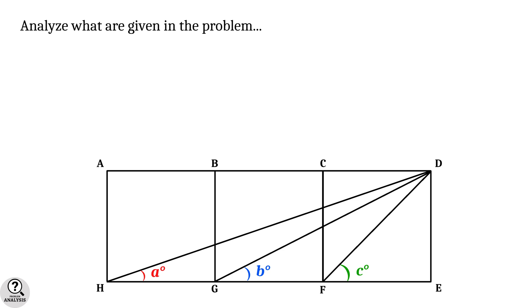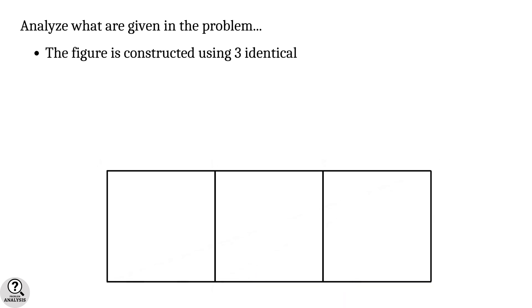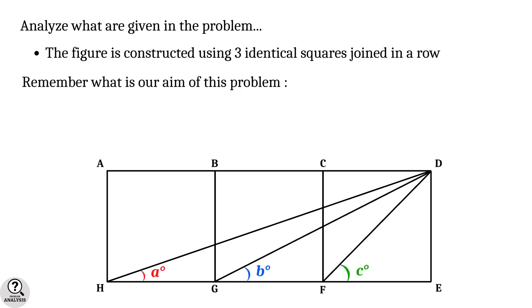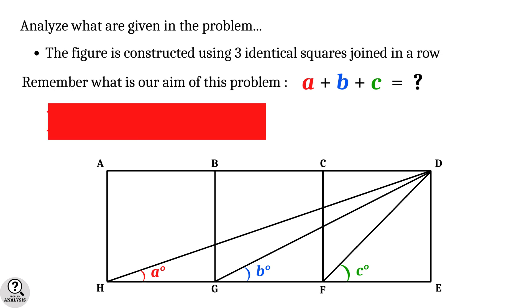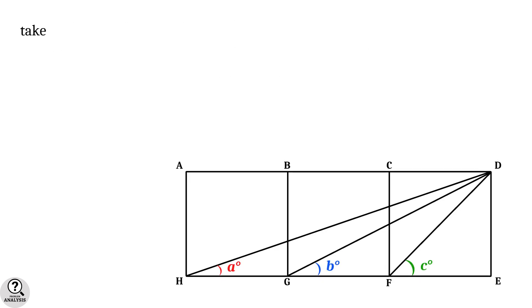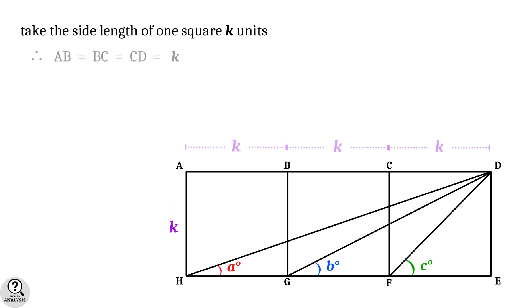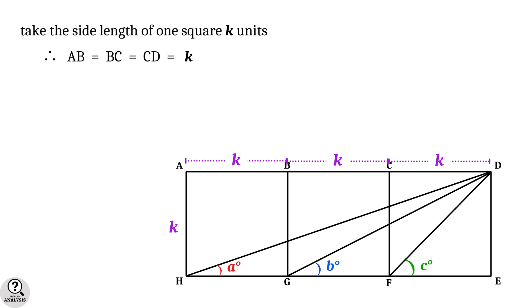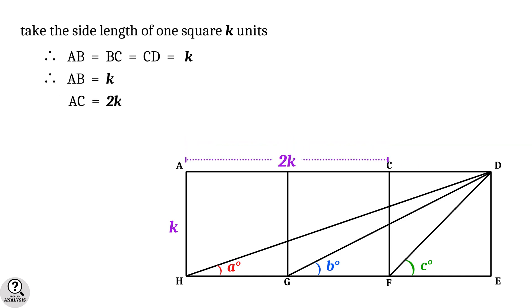Now analyze what is given in the problem. The only thing we know is that the figure is constructed using three identical squares joined in a row. Our aim is to find the value of the sum a plus b plus c. Let's take the side length of one square as k units. Therefore the sides AB, BC, and CD are equal to k, which gives us AB equal to k, ACD equal to 2k, and AD equal to 3k.